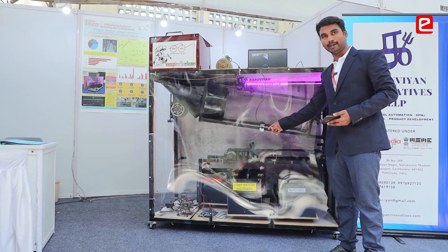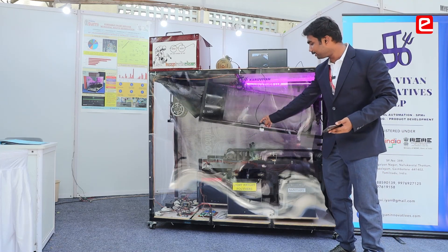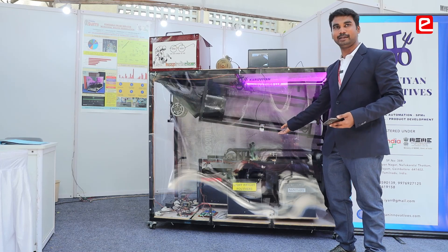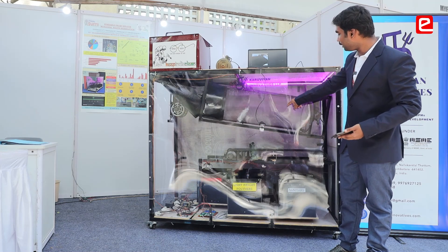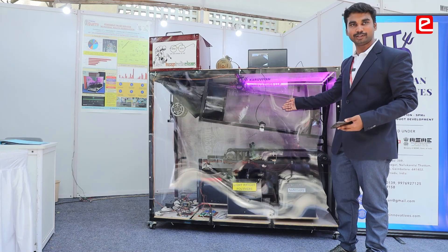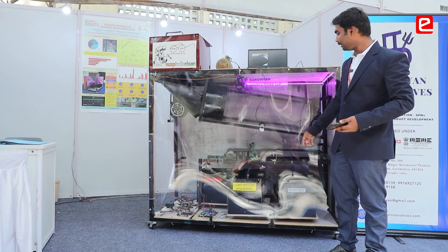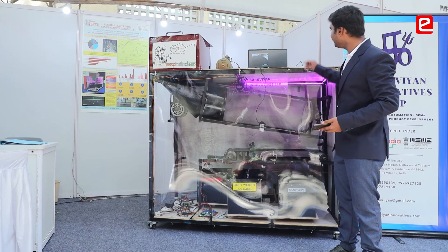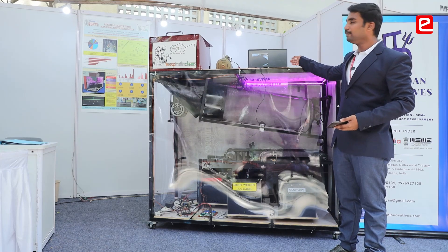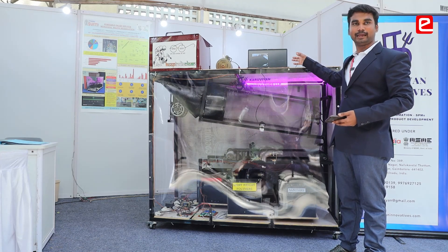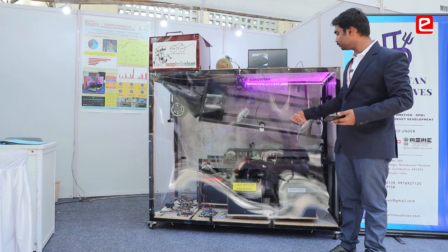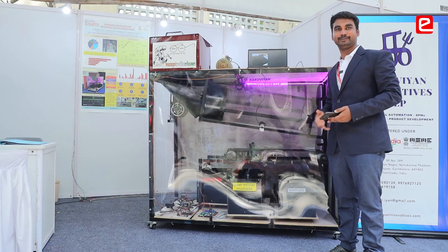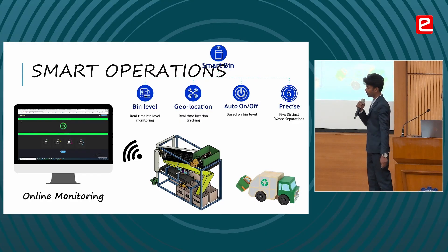On the conveyor belt, waste is separated into non-magnetic and magnetic particles — magnetic particles are attracted and separated out as magnetic waste. As you can see, a blower setup blows off the waste and directs it into a lightweight waste stream. Sanitary waste is then detected by a camera module and separated using stepper valves into the sanitary waste bin.